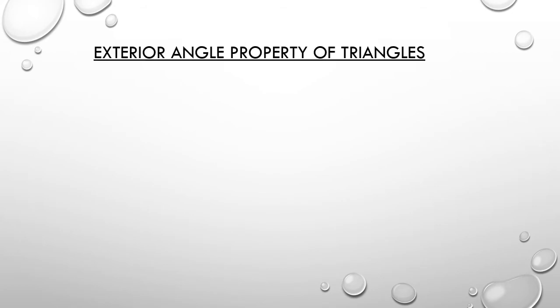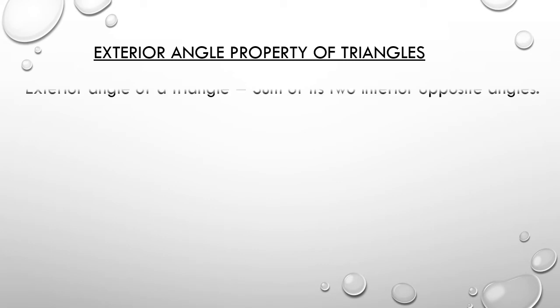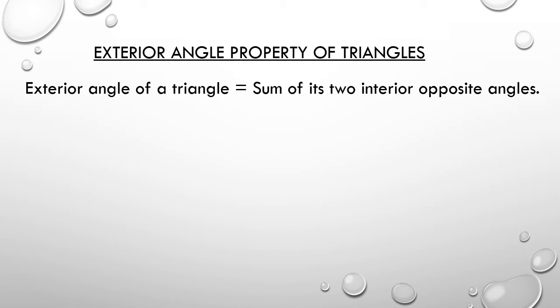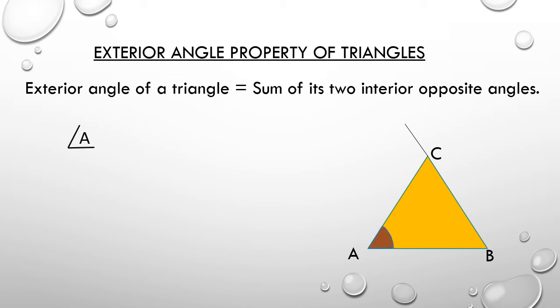Now let us learn the third property: the exterior angle property of triangles. An exterior angle of a triangle is equal to the sum of its two interior opposite angles. For example, take triangle ABC and extend one side — we extend BC. So angle A plus angle B is equal to the exterior angle at C.